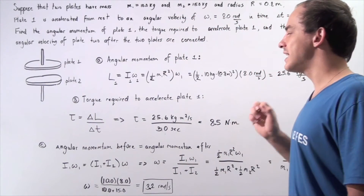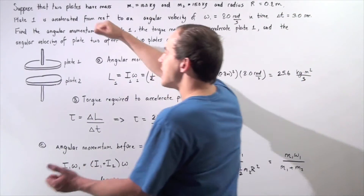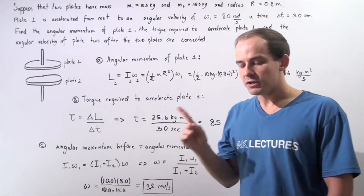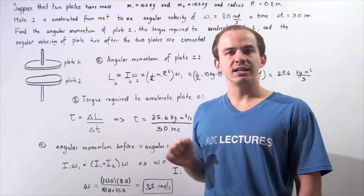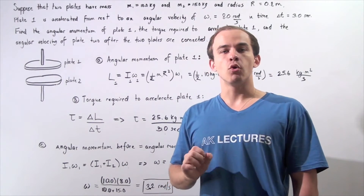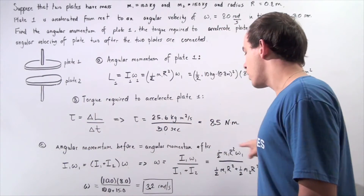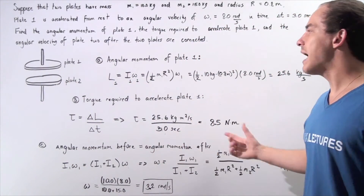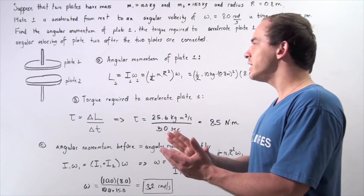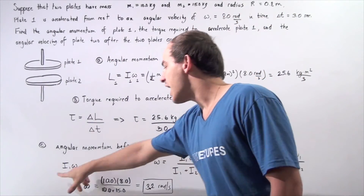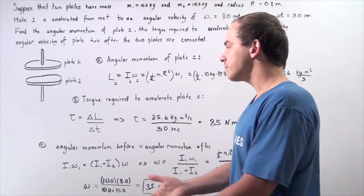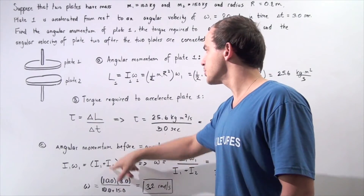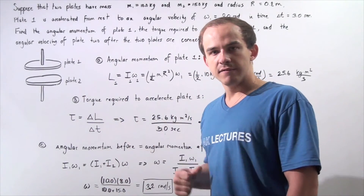Now let's move on to the last step. We want to calculate the angular velocity of our two plates after we connect them. We'll use conservation of angular momentum, making the assumption that the external net torque acting on the system is zero. The angular momentum before connecting equals the angular momentum after connecting. Before connecting, only plate 1 is rotating, so I1 times omega 1 equals, after connecting, the sum of the moments of inertia times the new angular velocity omega.